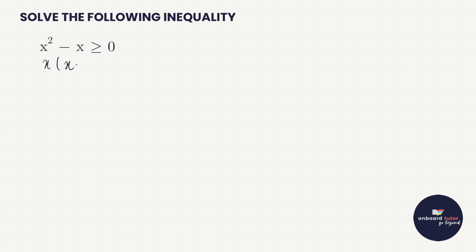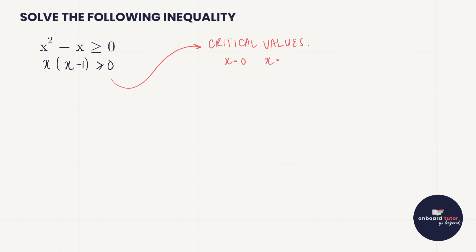I can take out a common factor of x, and I'm left with x minus 1. But now because this is greater than or equal to 0, I can't just say x equals 0 or x equals minus 1. This is actually a separate step that I need to do. I don't know the answers necessarily to this inequality, but I do know that there are points here which we call critical values. Critical values is when you take an inequality and you just solve those points as if they were equation points — so x equals 0 and x equals 1.